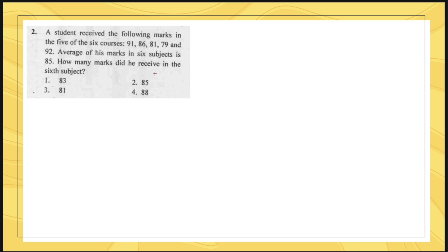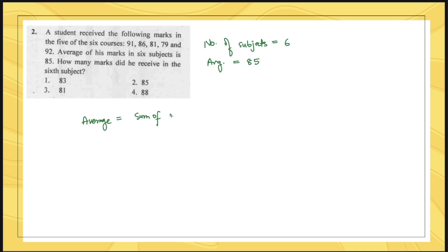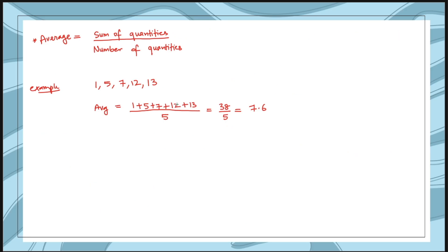Here is a question: a student received the following marks in 5 of the 6 courses — 91, 86, 81, 79, and 92. The average of the marks in 6 subjects is 85. How many marks did he receive in the 6th subject? Let's understand how to solve this. The number of subjects is 6 and the overall average is 85. We use the formula: average = sum of marks divided by number of subjects.